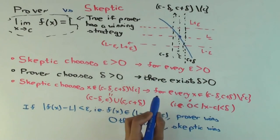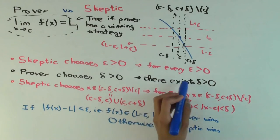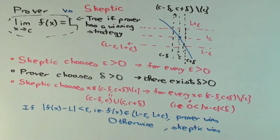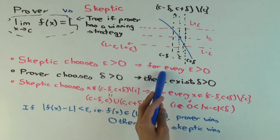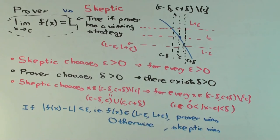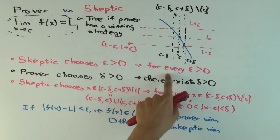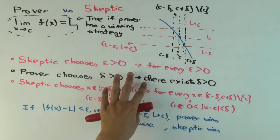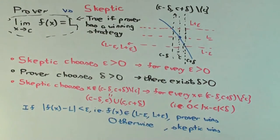All the moves of the skeptic are prefaced with 'for every,' whereas all the moves of the prover — there's really only one — are prefaced with 'there exists,' because the prover controls their own choices. When it's the prover's turn, it's enough to say that a choice exists. But since the prover doesn't control what the skeptic does, all the skeptic's moves use 'for every.' By the way, there are mathematical symbols for these quantifiers, which I'm not introducing in this video, but if you've seen them and got confused, there's a future video where I explain those symbols.